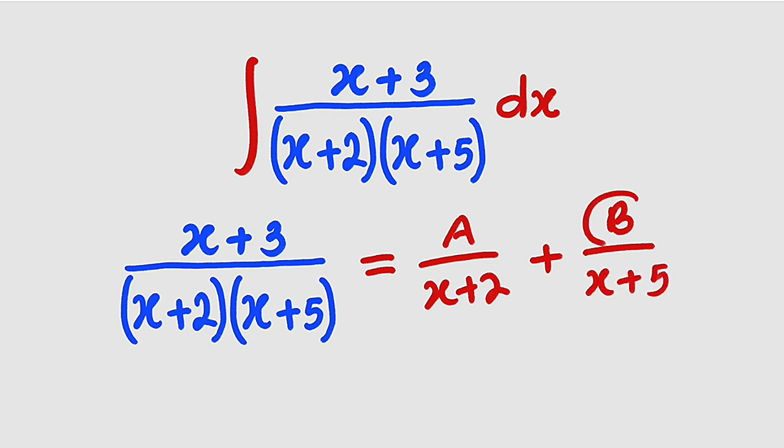Why do we have constants at the top? Always, you have to have a polynomial of degree one less than the denominator. This is linear. One degree less will be a constant. This is also linear. One degree less will be a constant.